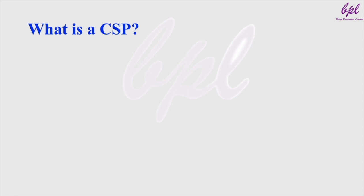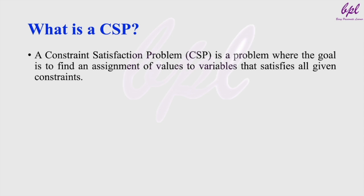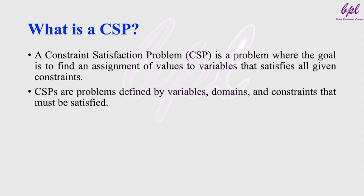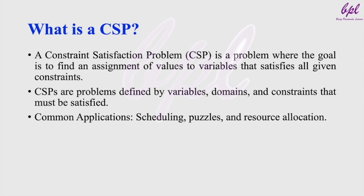So, what is a CSP? A constraint satisfaction problem, or CSP, is a type of problem where the objective is to assign values to a set of variables such that all the given constraints are satisfied. CSPs are problems defined by variables, domains, and constraints that must be satisfied. CSP problems are common in areas such as scheduling, resource allocation, and solving puzzles like Sudoku.